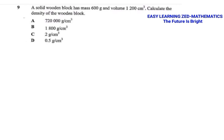The first question is Question 9: a solid wooden block has a mass of 600 grams and a volume of 1200 centimeter cubic. Calculate the density of the wooden block. To get this question correct, you need to know the formula for density. The formula is: density is equal to mass over volume.